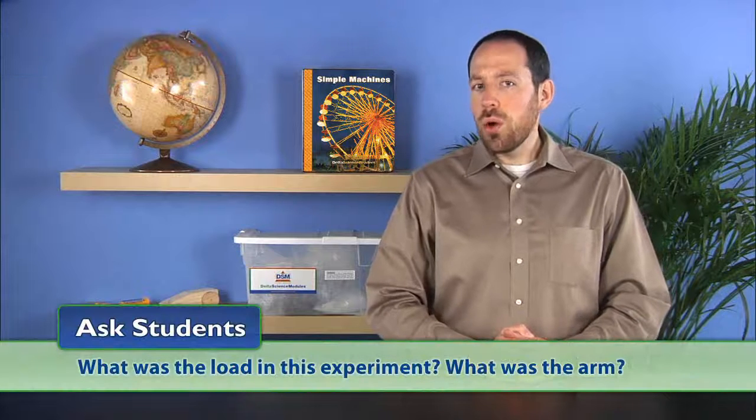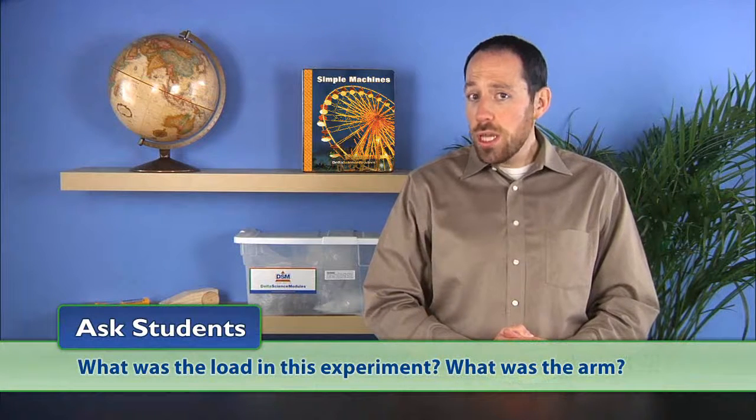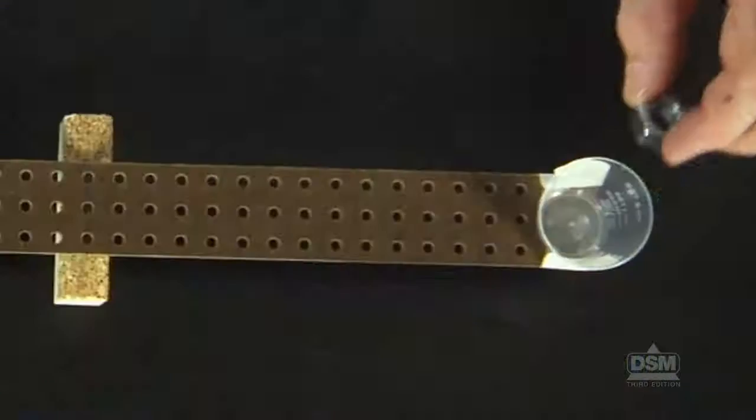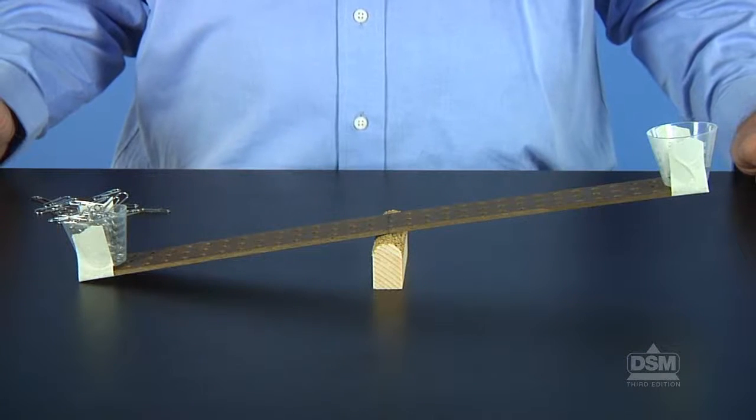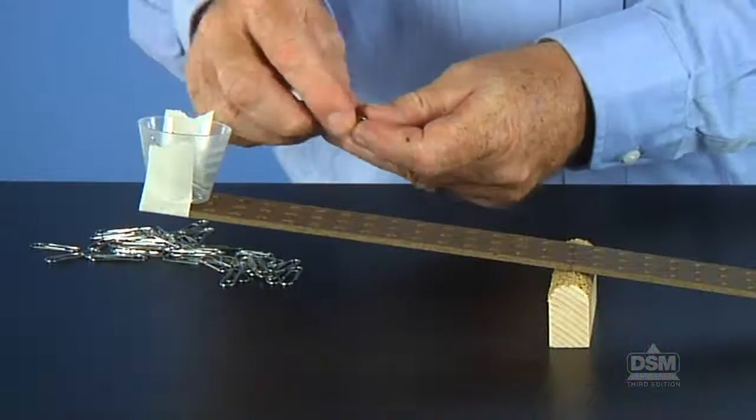Next, ask students, what was the load in this experiment? What was the arm? Confirm that the hex nut was the load and the pegboard beam was the arm. Then ask, what was the force or effort? A student should confirm that the paper clips were the force.